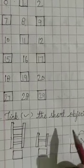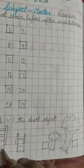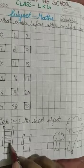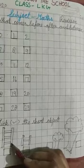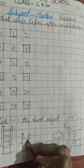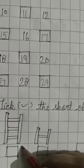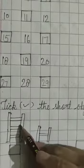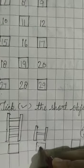Next is tick the short objects. Here are object pictures. You have to say that the short objects are short. This is long. And this is short. So, tick here.